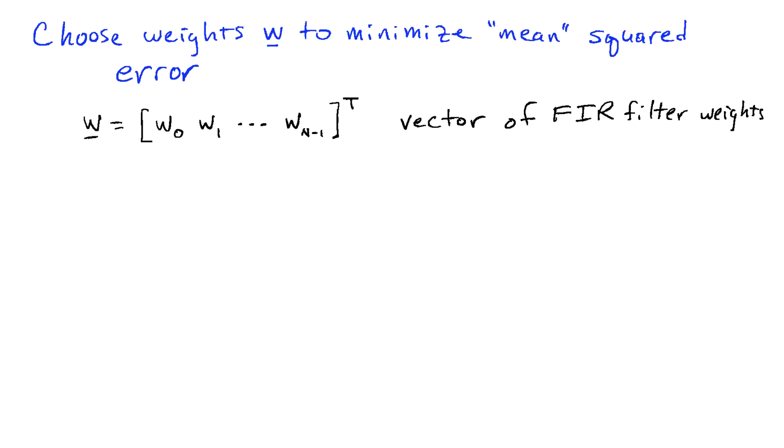Now the goal is to choose these filter coefficients that we put in the vector w to minimize the mean squared error between D and D hat. So I'm going to put this vector w to contain those coefficients or filter weights.